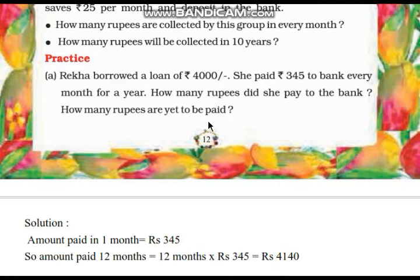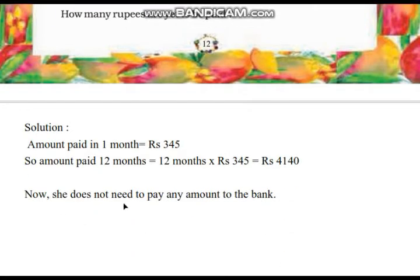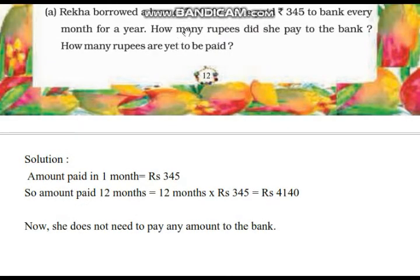So how many months are there in a year? 12. So we can multiply 345 by 12. The amount paid in one month is Rs 345, so total paid equals Rs 4140. Now she does not need to pay any further amount to the bank because she borrowed Rs 4000 and she paid Rs 4140.